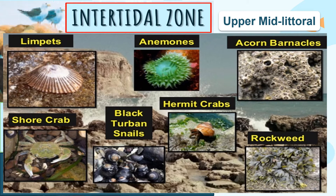In the upper mid-littoral zone, we have limpets, anemones, acorn barnacles, shore crabs, black turban snails, hermit crabs, and rockweeds. Note that although there is abundant water, it is not high enough to sustain large amounts of vegetation. Rock pools inhabited by small fish and larger seaweeds can also be found here. The hermit crab adapts extremely well since it is sheltered from the high temperature range by its portable shell home. These are the organisms that survive in the upper mid-littoral or high tide zone.